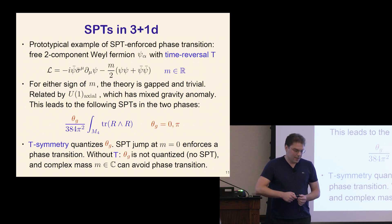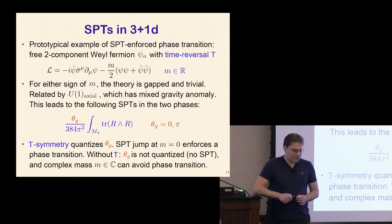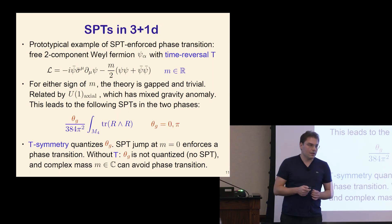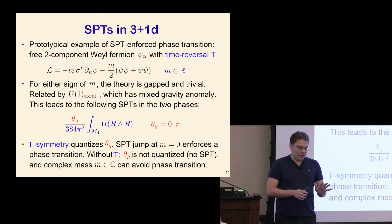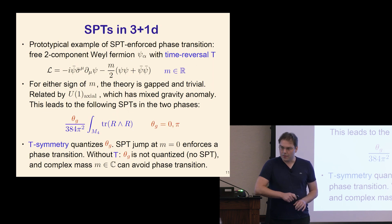Now we're back in four dimensions for the remainder of the talk. The simplest, least mathematically sophisticated analog of a Chern-Simons term in four dimensions is a theta term. I'll briefly review the simple setting in which we'll use theta terms as SPTs for the remainder of the talk.